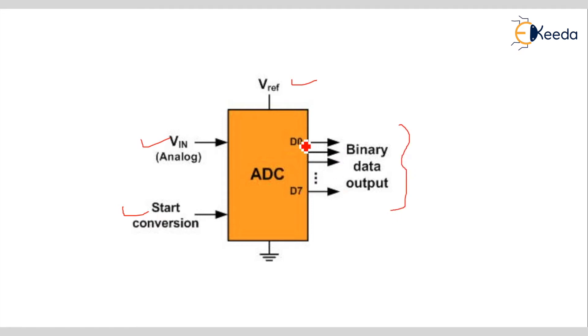So this d0 to dn or d here d0 to d7 is how many bits? It is 8 bit. So we call it as an 8 bit ADC because it gives the whatever the analog value as an input it gives the 8 bit digital value. Now VIN, see VIN is analog input value.